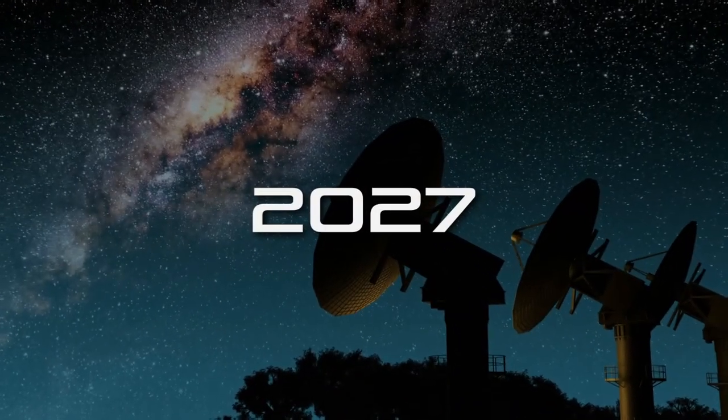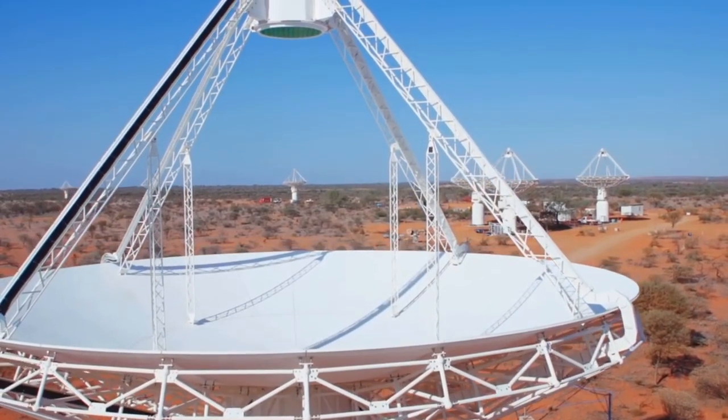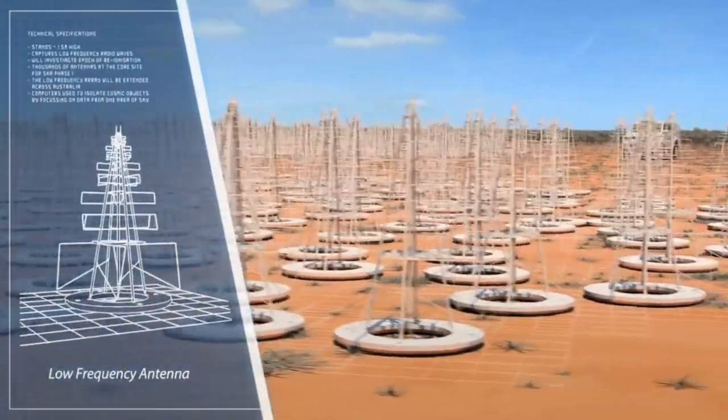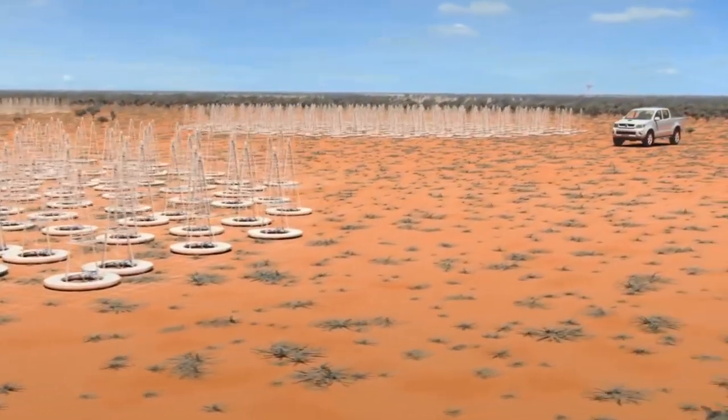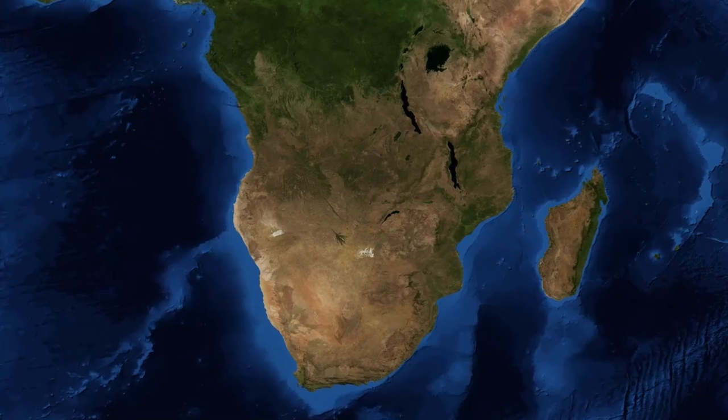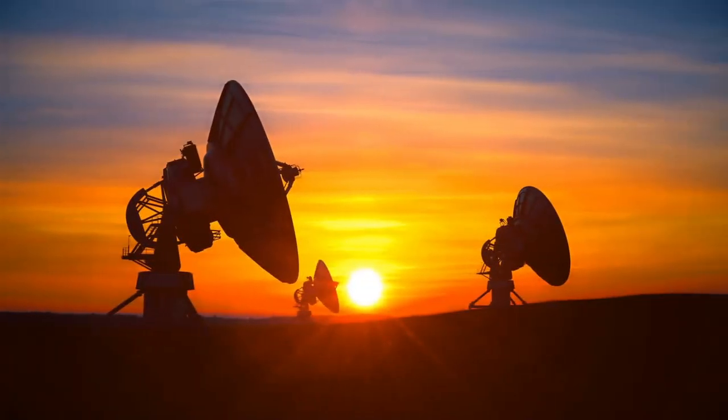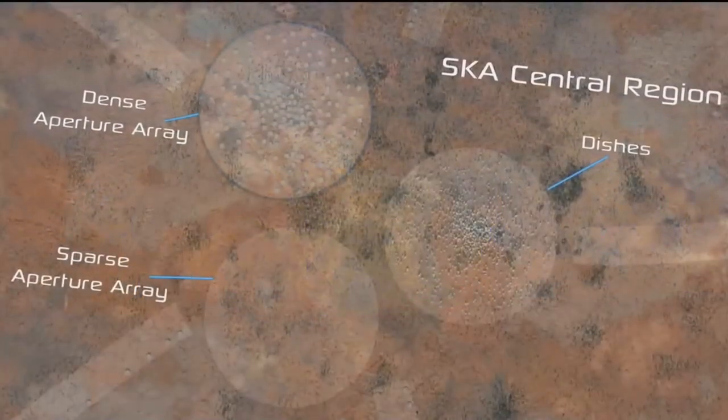When SKA is fully operational, it will represent a huge leap in our capacity to observe the cosmos. By 2027, when the project is set to be completed, SKA will have thousands of dishes and a million low-frequency antennas set up in various sites. And they plan to keep growing it, with the eventual goal to expand from South Africa further north.